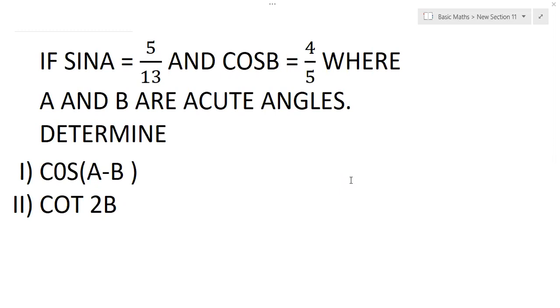Hello guys, so I'd like us to look at how to solve this question. If sine A is equal to 5 over 13 and cos B is equal to 4 over 5 where A and B are acute angles, determine cos of A minus B and cot 2B.